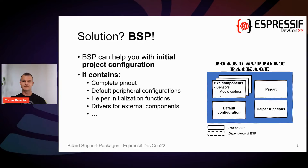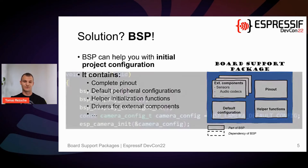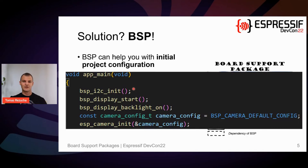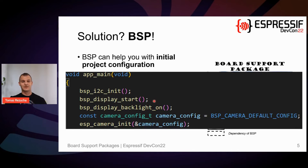If you want to use a BSP in your project, you add it as a dependency. During build, it will download all the required code including the external components, and that is ready to use. Going back to the example project we discussed, although relatively complicated, the configuration is now just five lines of code as you can see here. Looking at this code snippet: first we initialize I2C, which is used for both camera and audio codec configuration. Then with bsp_display_start we initialize SPI used for the LCD configuration interface, set up LVGL — the graphics library — allocate required memory, and start the FreeRTOS tasks.